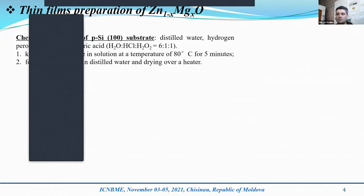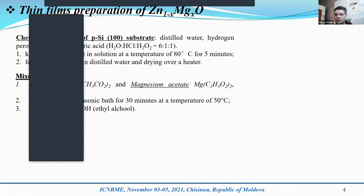Firstly, we performed chemical treatment of a silicon substrate in distilled water, hydrogen peroxide, and hydrochloric acid. After that, we kept the substrate in solution at a temperature of 80 degrees for 5 minutes, followed by rinsing in distilled water and drying over a heater. Then we prepared a solution of zinc acetate and magnesium acetate in an ultrasonic bath for 30 minutes at 50 degrees, using ethyl alcohol as solvent.